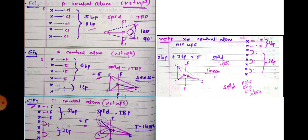In SF4 (sulfur tetrafluoride), sulfur belongs to the oxygen family with ns2np4 — six valence electrons. Four electrons are shared with four fluorines, giving four bond pairs. One pair remains unshared — one lone pair. Total = 4 + 1 = 5, so sp3d hybridization. Geometry is trigonal bipyramidal, but the lone pair distorts it, giving a seesaw shape.